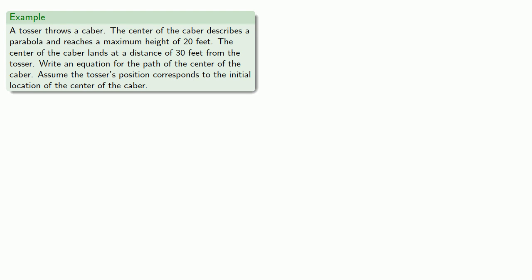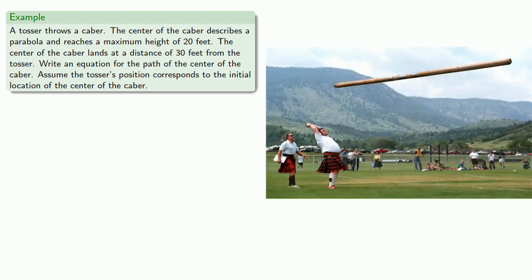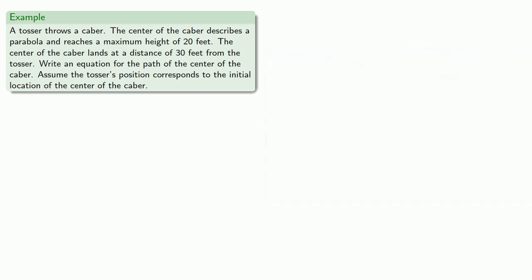So let's go to Scotland where they practice the fine art of caber tossing. That's basically throwing a telephone pole. So let's say a tosser throws a caber. The center of the caber describes a parabola and reaches a maximum height of 20 feet. The center of the caber lands at a distance of 30 feet from the tosser. Let's write an equation for the path of the center of the caber, and we'll assume the tosser's position corresponds to the initial location of the center of the caber.